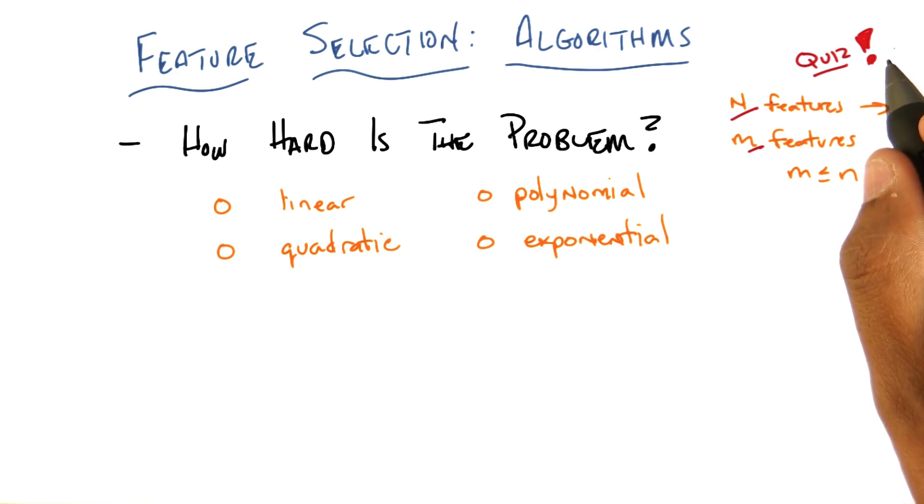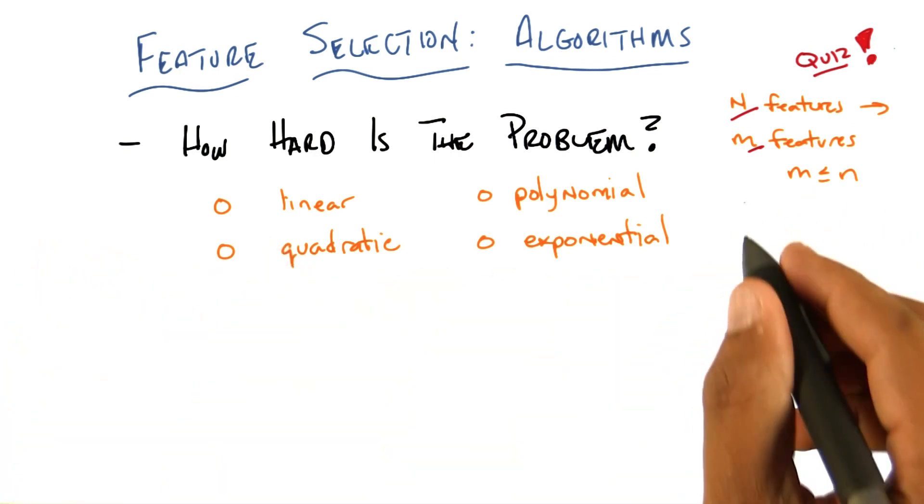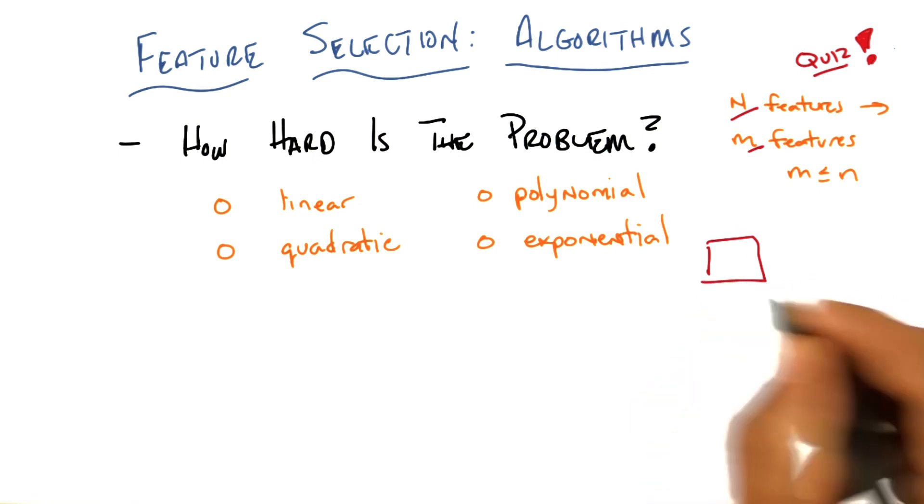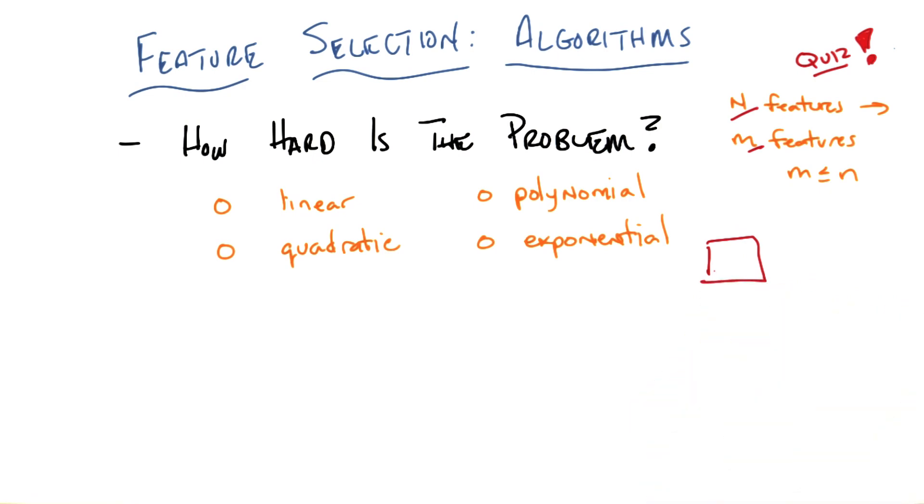Just to make sure I understand. So can you draw like a rectangle, like that's our input space x? Okay. So we got some input space x. This is a rectangle. And it's got n features, so those are like the columns. Okay.